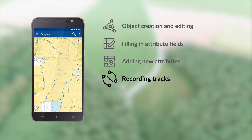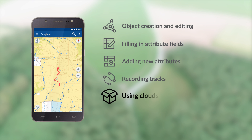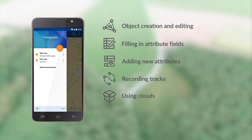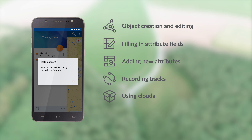Recording tracks: record GPS tracks and display your current route on the map. Using cloud: use built-in access to Dropbox, Google Drive, and OneDrive cloud drives to store maps and collected data. Support for the standard OGC GeoPackage format allows the easy exchange